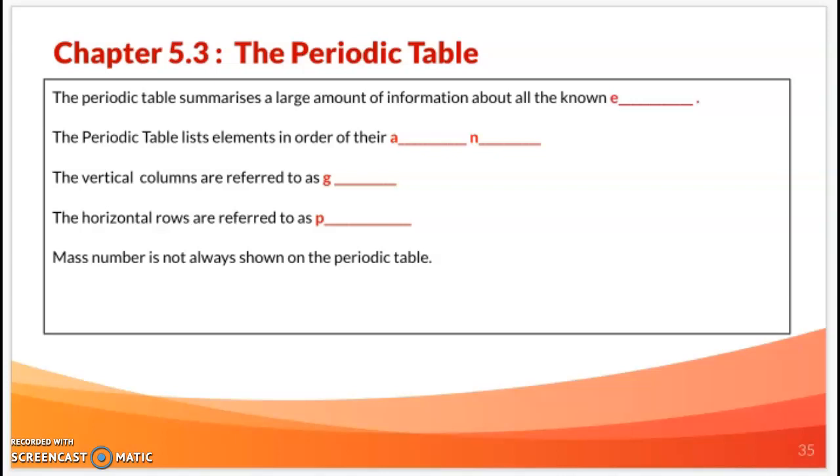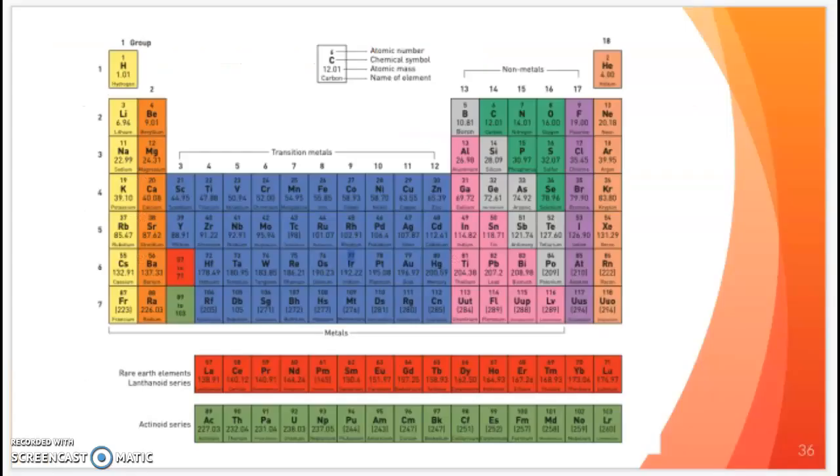You'll find that the vertical columns on the periodic table are in fact called the groups. The horizontal are the periods. With those videos, you'll be able to answer these ones. The periodic table summarizes a large amount of information about all the known elements. The periodic table lists elements in order of their atomic number. Vertical columns are groups, horizontal rows are periods. Mass number is not always shown on the periodic table, especially in this case because we're starting off with the foundation. Later on, you'll notice that the mass numbers have decimal points because they're an average of how abundantly the masses of these elements are found in terms of their isotopes.